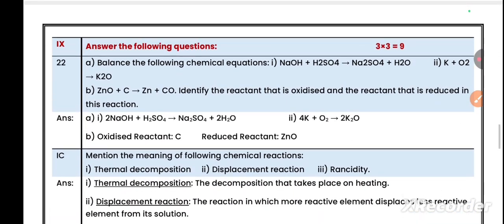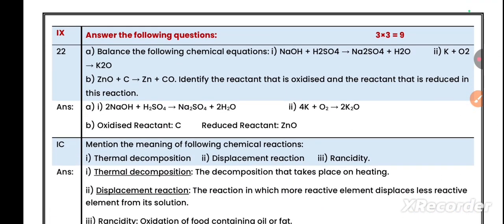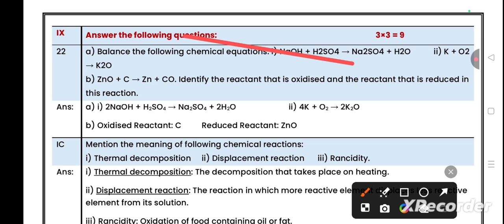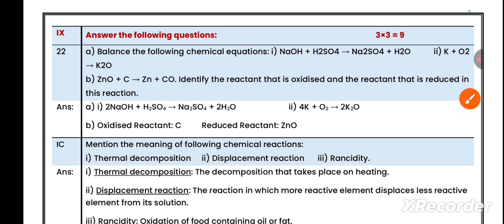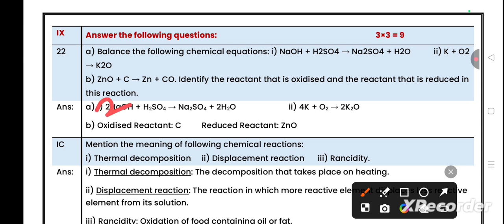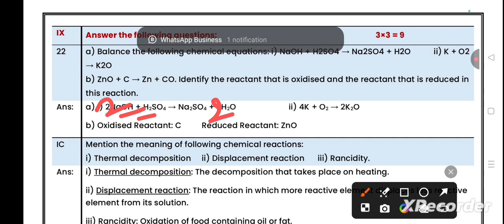Question main number 9: Answer the following questions, each carrying three marks, total three questions for nine marks. Question 22: Balance the following chemical equations. NaOH (sodium hydroxide) reacts with sulphuric acid to give sodium sulphate and water. To balance this reaction, sodium sulphate has Na2SO4, so to balance that sodium we take 2 on the left side. To balance hydrogen, since there are four hydrogens total, we multiply water by 2. Now it's balanced.